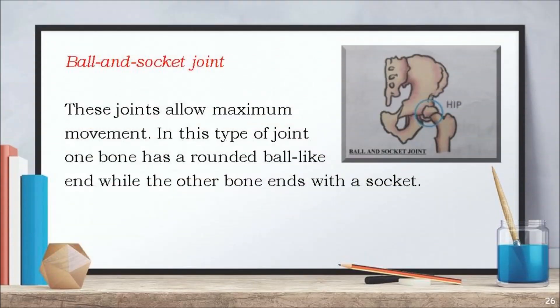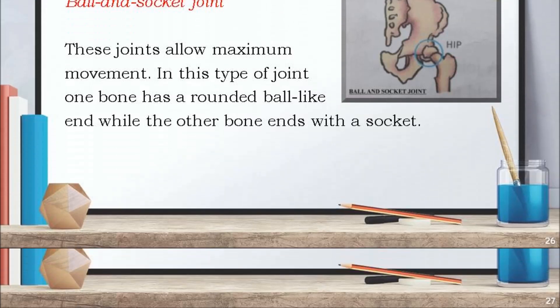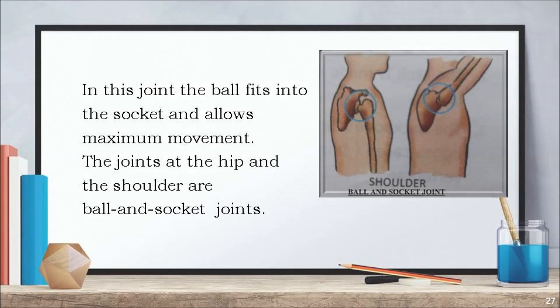The ball and socket joints allow maximum movement. In this type of joint, one bone has a rounded ball-like end while the other bone ends with a socket. The ball fits into the socket and allows maximum movement. The joints at the hip and the shoulder are ball and socket joints.